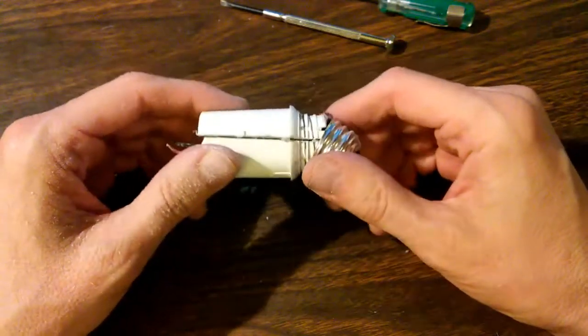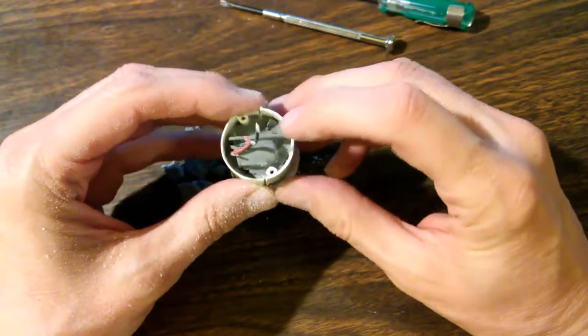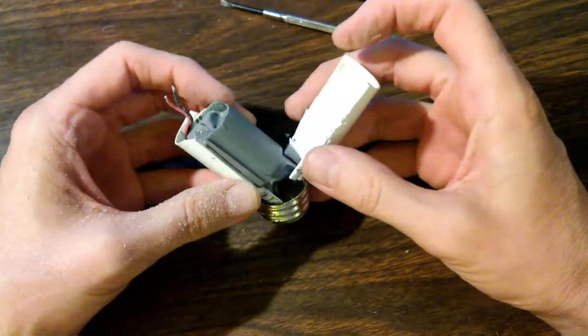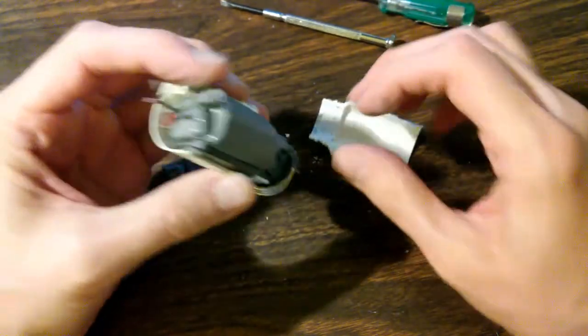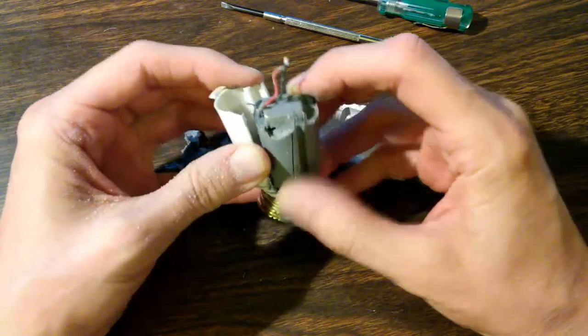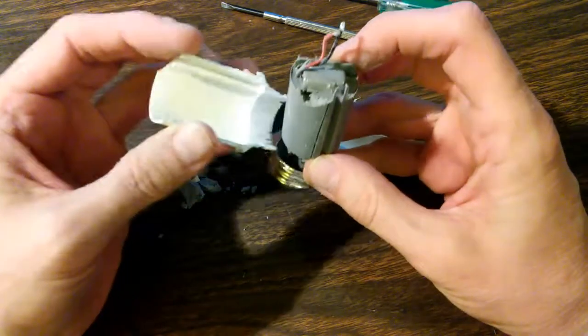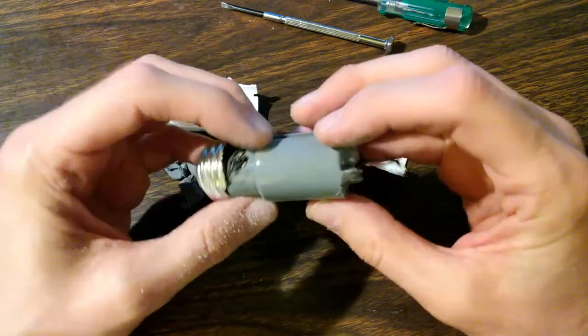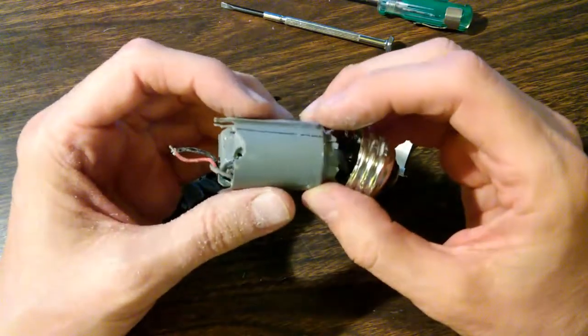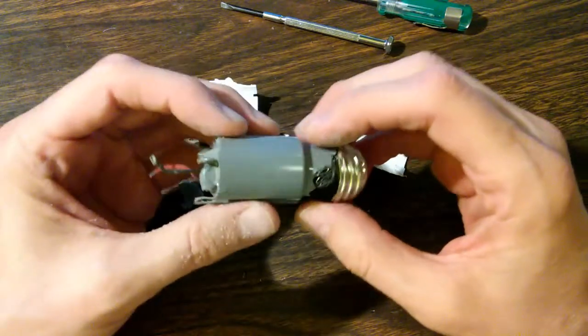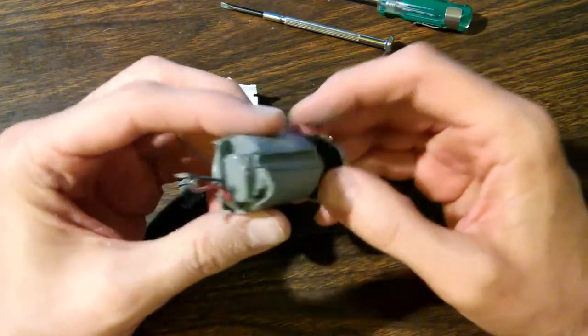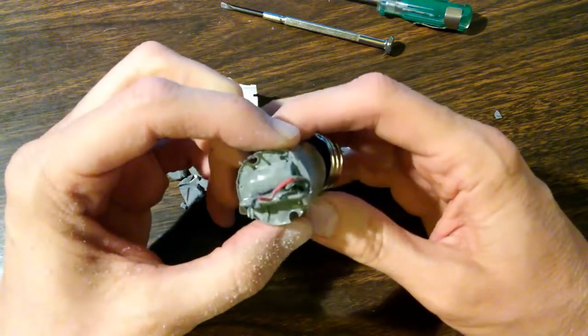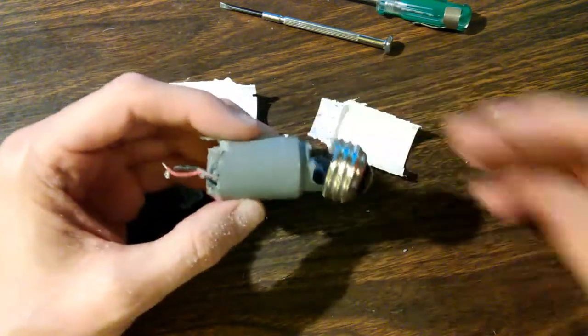I took my Dremel tool to this thing. There's just nothing else I can do. There's just a solid cast of this potting material. There's a circuit board buried in there somewhere. I'm just going to have to chop away and see if I can't expose it without totally destroying it.